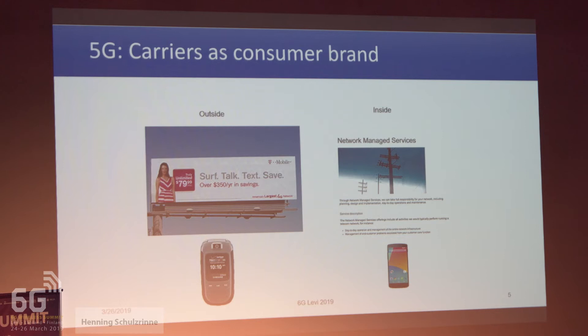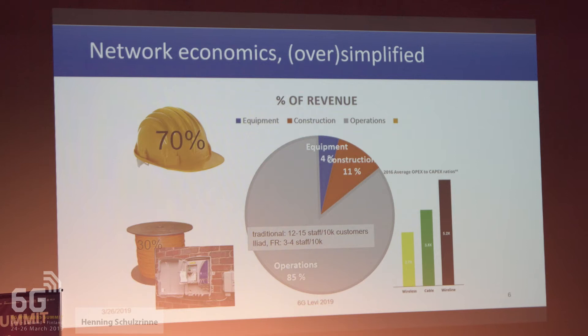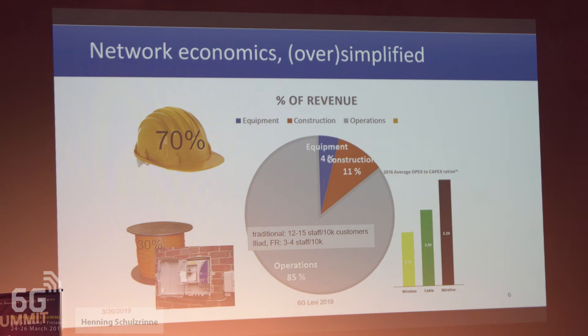We hear a lot that 5G and maybe 6G is so capital intensive that we have to reduce capital expenditure, but I've yet to hear actual numbers. Because as an industry, telecom isn't terribly capital intensive. Only about 15% of the money paid to fixed or wireless providers — roughly speaking, could be 16 or 14 depending on the year — is actually spent on capital equipment, meaning long-lifetime equipment. 85% is everything else, and I'll go into what that everything else is in a minute.